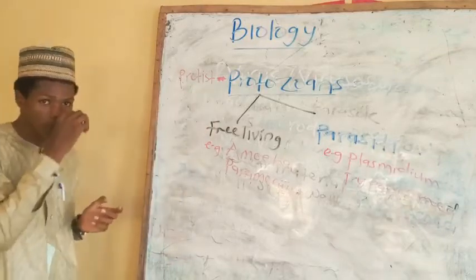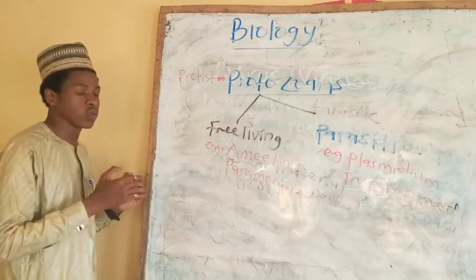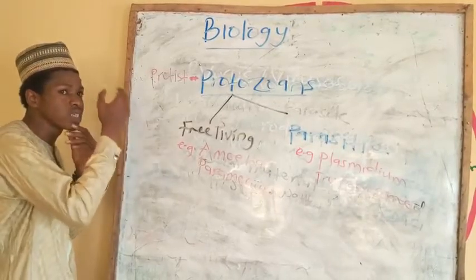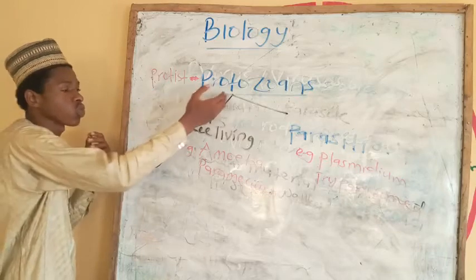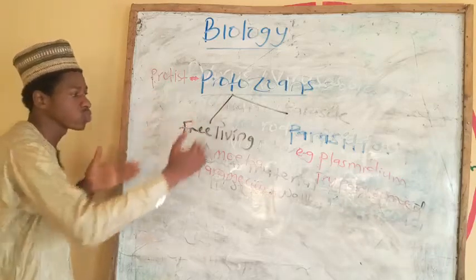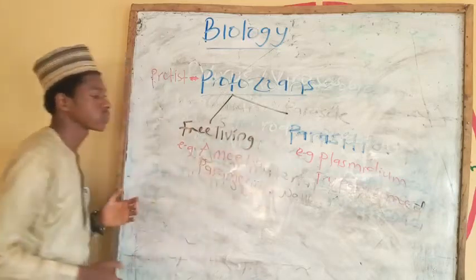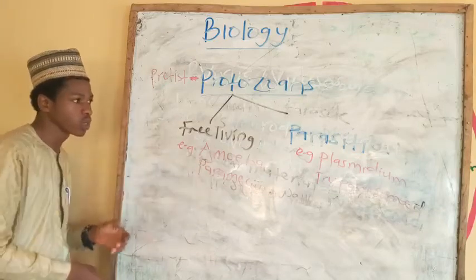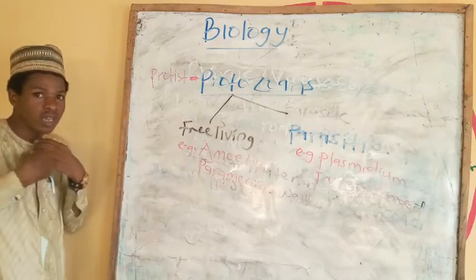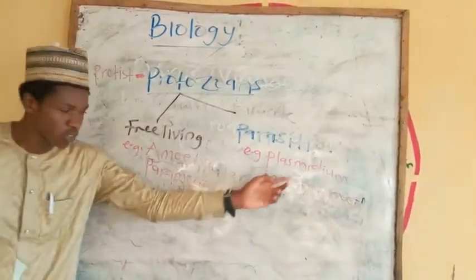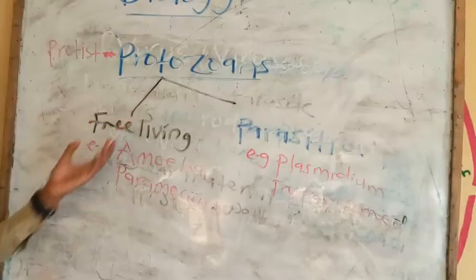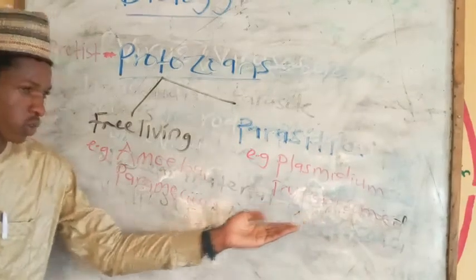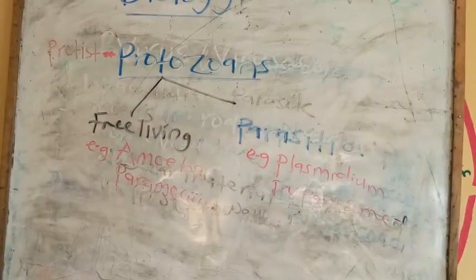Now let's look at the protists. Protists are eukaryotic unicellular microorganisms. The protists we are going to talk about are protozoans. Protozoans are divided into two: free-living and parasitic ones. The free-living ones are not harmful — for example, amoeba or paramecium. While parasitic ones live inside a host and cause disease. For example, plasmodium causes malaria, and trypanosome causes trypanosomiasis, or sleeping sickness.